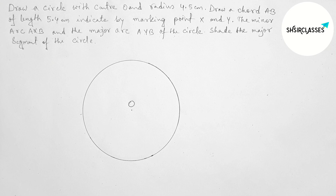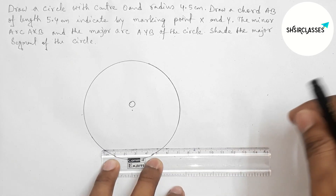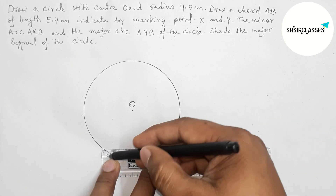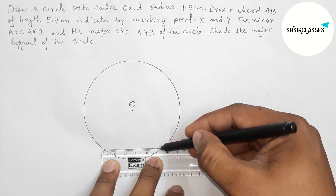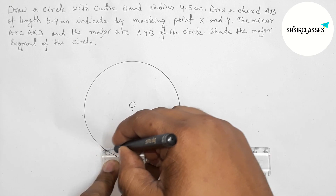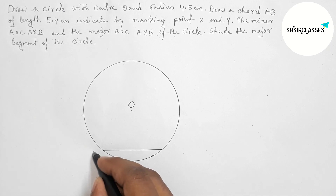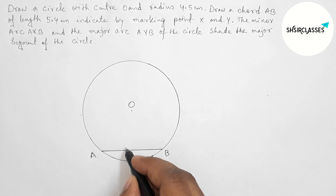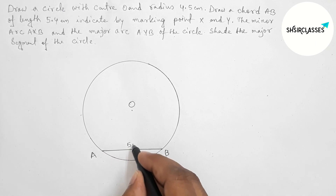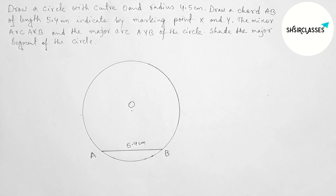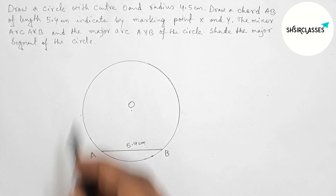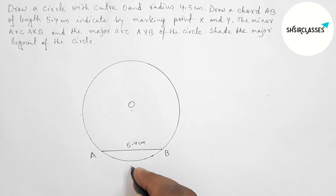Next, taking a chord AB of length 5.4 centimeters with the help of scale. So here measuring — this is a 5.4 centimeter line segment. Taking point A and point B, so AB is a chord of length 5.4 centimeters.